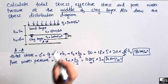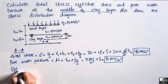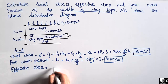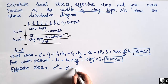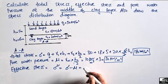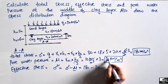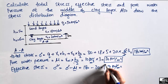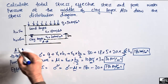The effective stress at the midpoint of the clay layer is represented by sigma dash. It equals total stress minus pore water pressure: 180 minus 30, which gives 150 kN/m². This is the effective stress at the midpoint of the clay layer at section A-A.